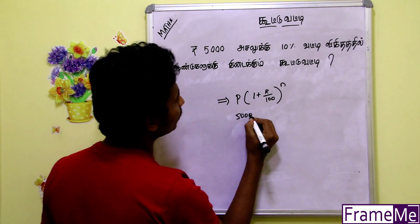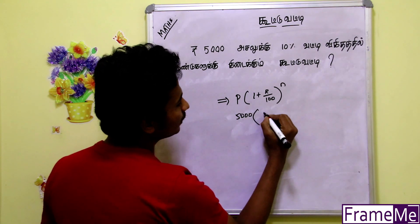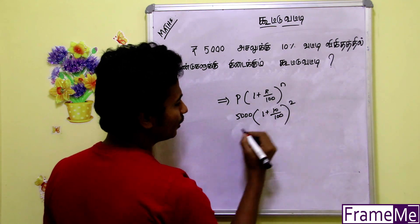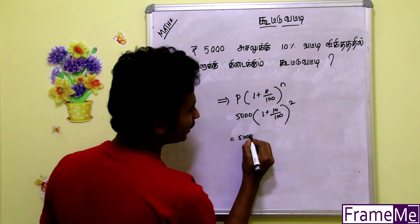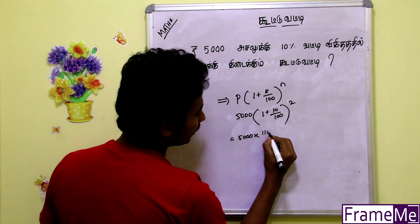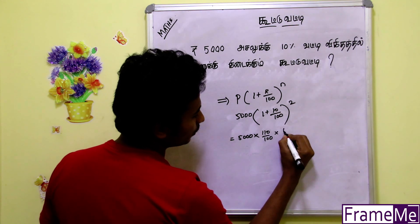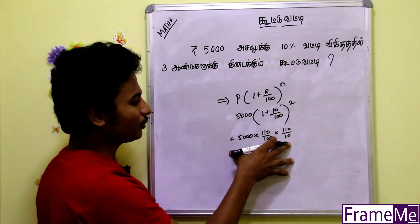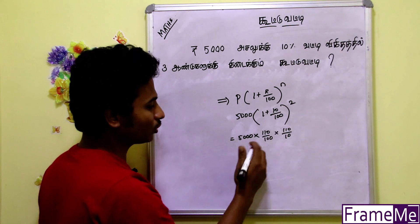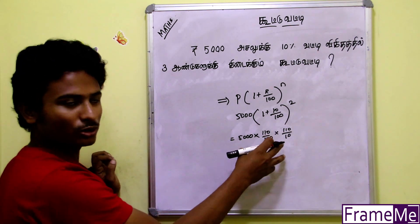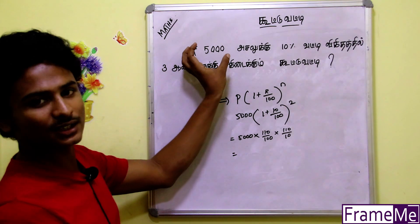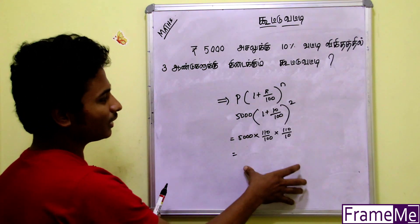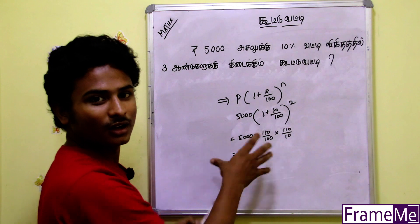If we change that — 5,000 into 1 plus 10 by 100 whole power 2. If we change that, we change the answer. If we change the answer, it's a little complicated.